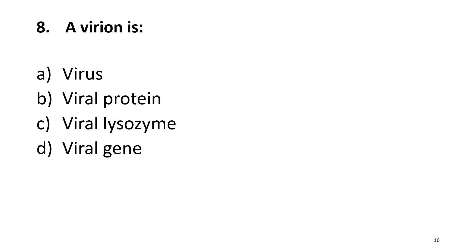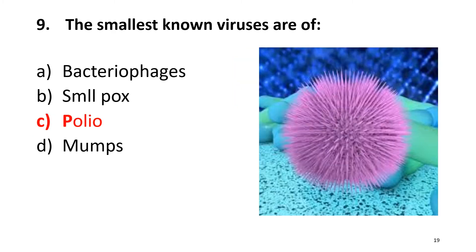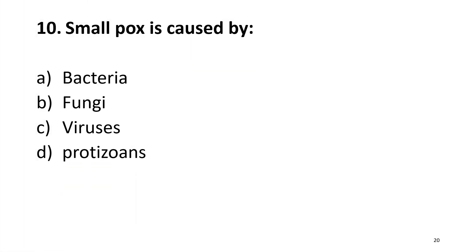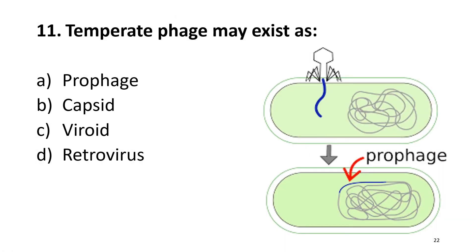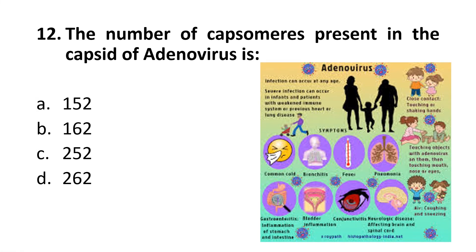Question 8: A virus contains nucleic acid plus proteins. Question 9-10: Polio viruses — the right answer is Charlie — and smallpox is caused by viruses. Question 11: A temperate phage can exist as a prophage during the lysogenic cycle — right answer is alpha. The number of capsomeres present in adenoviruses, which cause the common cold, is 252. The right answer is Charlie.